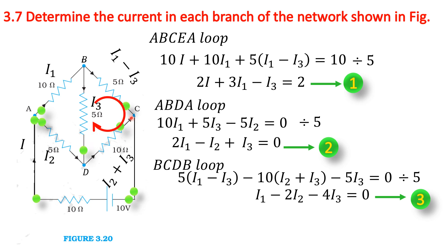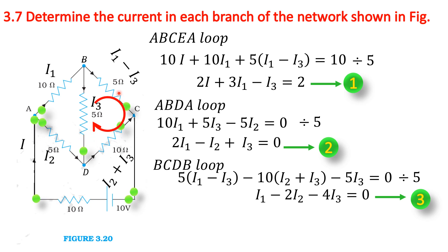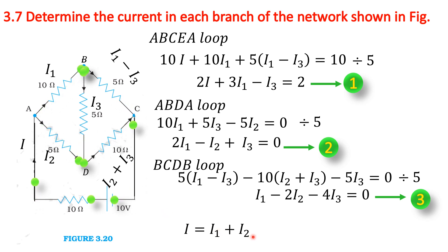At junctions A and C, the total current I splits into I1 and I2. Combining: (I1 minus I3) plus (I2 plus I3) equals I1 plus I2 equals I. So we have I equals I1 plus I2 as Equation 4.